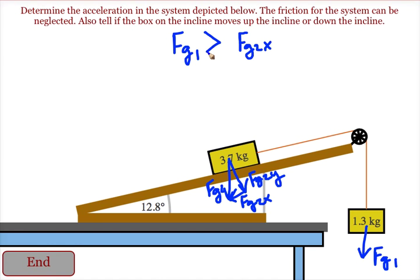If gravity 1 is larger, this block will move down. If the force of gravity is less on this block, then this block would move up. Once we determine which direction the block on the incline is going to move, we can draw in friction.